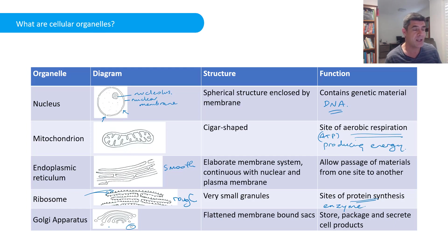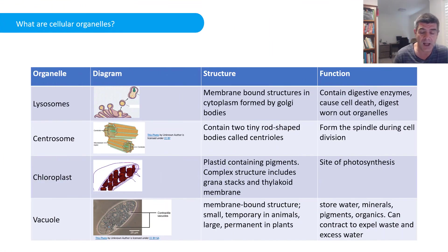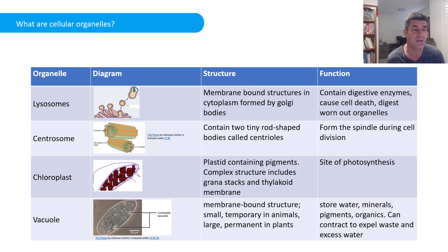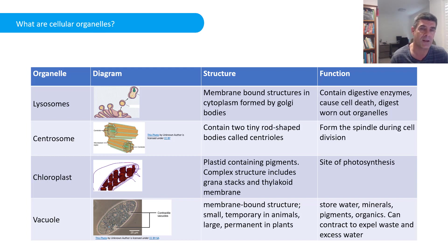The Golgi apparatus is also associated with the production of lysosomes — you can see them almost budding off the edge of the Golgi here. These membrane-bound structures are the cleaners of the cell. They contain digestive enzymes and digest any chemicals the cell isn't using anymore, including worn-out organelles, cleaning up all unwanted chemicals.